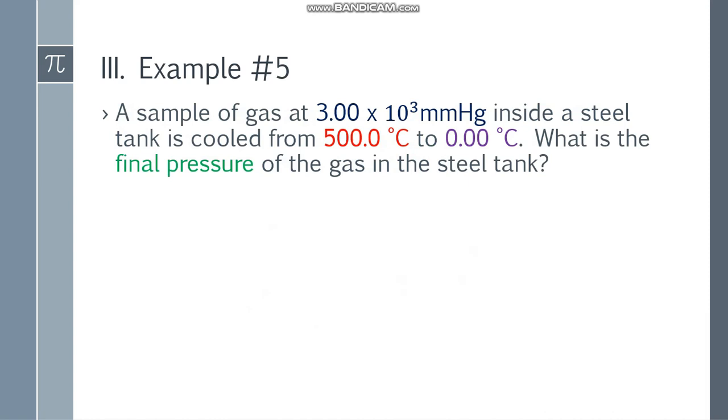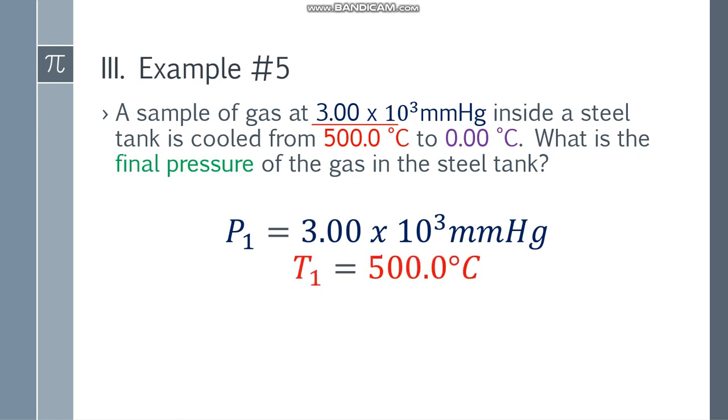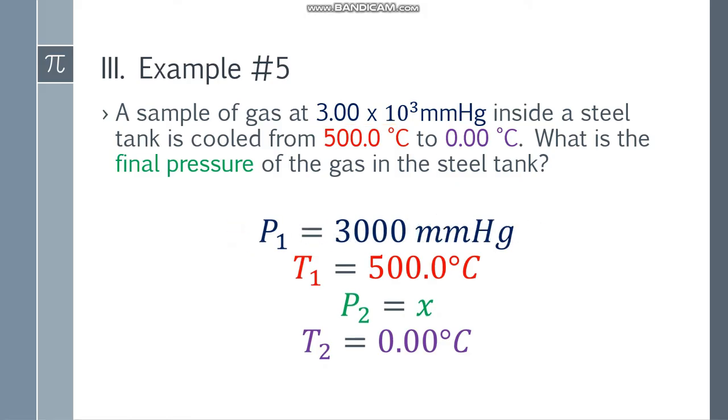Let's move to example number 5. What if there's scientific notation like this one? A sample of gas at 3.00 times 10 to the third power or 10 cube mmHg inside a steel tank is cooled from 500 degrees Celsius to 0.00 degrees Celsius. What is the final pressure of the gas in the steel tank? So P1 is 3.00 times 10 to the third power mmHg, T1 is 500.0 degrees Celsius, P2 is x, and T2 is 0.00 degrees Celsius.